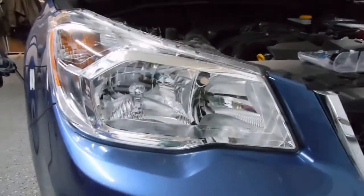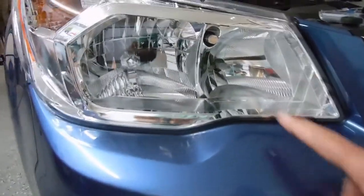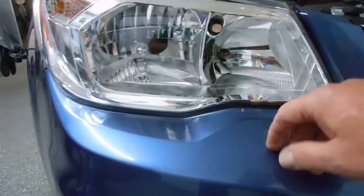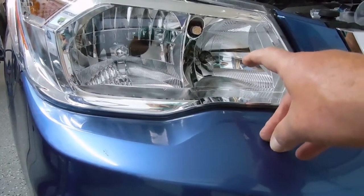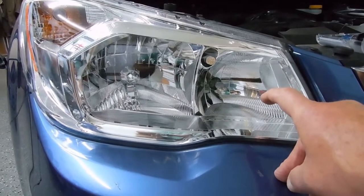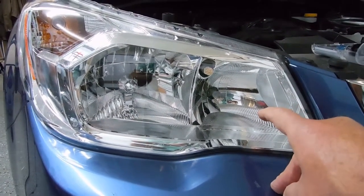This is a 2016 Subaru Forester and the high beam will be the inside lamp. This is the low beam. This also serves as the daytime driving light, so I am curious to see how that functions with this new lamp.